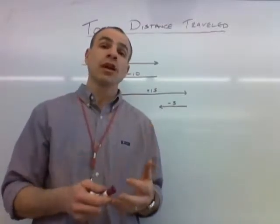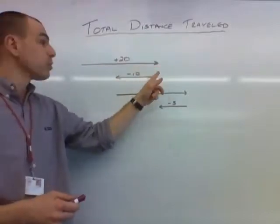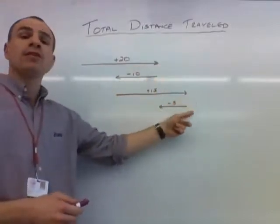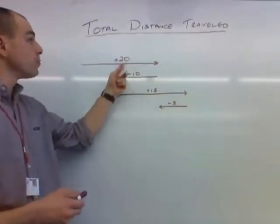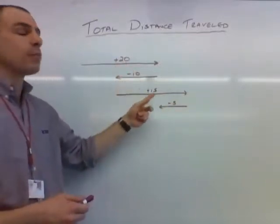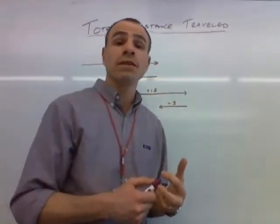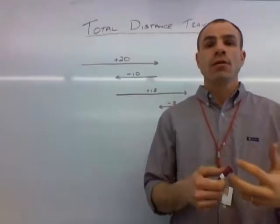Ultimately, we are 20 meters closer to the finish line than we were when we started walking. But the total distance that we traveled, well it was 20 meters plus another 10 meters plus another 15 meters plus another 5 meters. So we have 20 plus 10 is 30, plus 15 is 45,